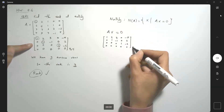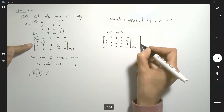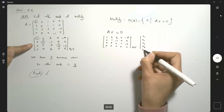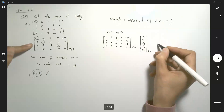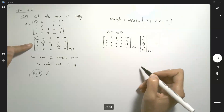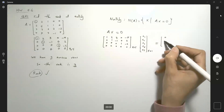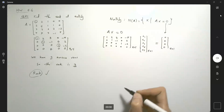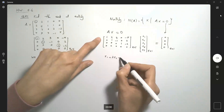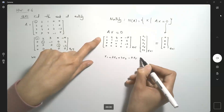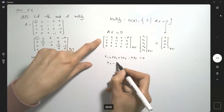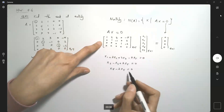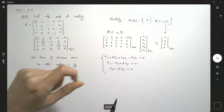So you're going to have 5 variables multiplying a 5 by 1 vector, equaling a 4 by 1 zero vector. From the equations: x1 plus 2x2 plus 3x3 minus 4x5 equals 0. From the second row: x2 minus x3 plus 2x5 equals 0. From the third row: x4 minus 2x5 equals 0. And that's it — we have three equations to work with.